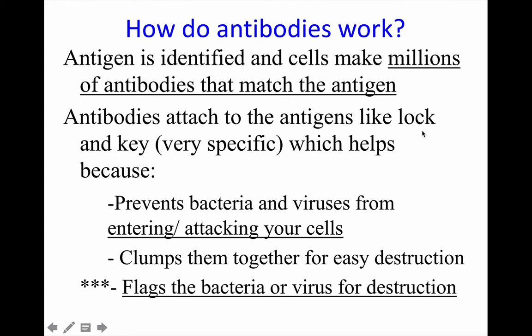So exactly how do antibodies work? B cells make millions of antibodies, and once they attach to the protein receptors, they prevent the bacteria or virus from attacking your cells. If it's a virus, it prevents it from accessing your cells. If it's a bacteria, it forms like a dog pile — making it very difficult for the bacteria to get around. It also clumps bacteria and viruses together, making it easier for your phagocytes to come along and destroy them. Finally, it acts like a red flag that says this thing needs to be destroyed — it flags for destruction.